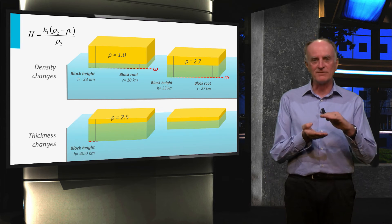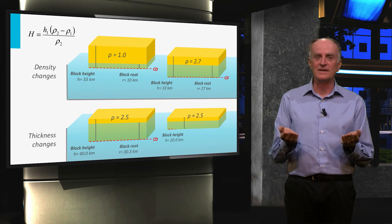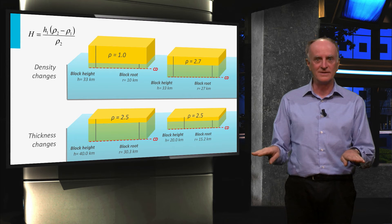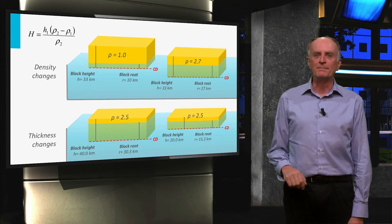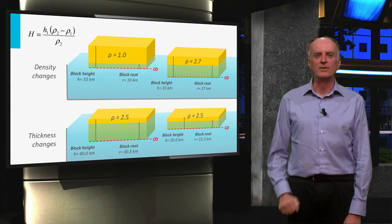A decrease in thickness of the body produces the same result, namely a lower topography. Note also that the base of the thin block is higher than that of the thick block.